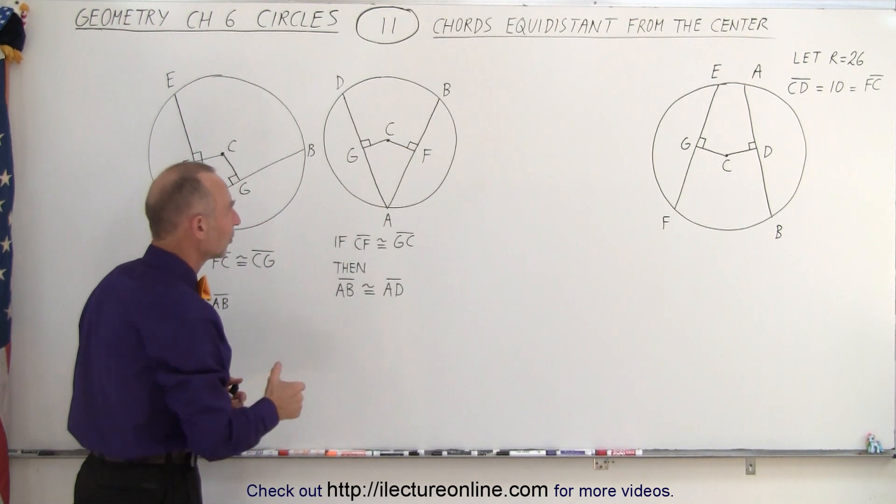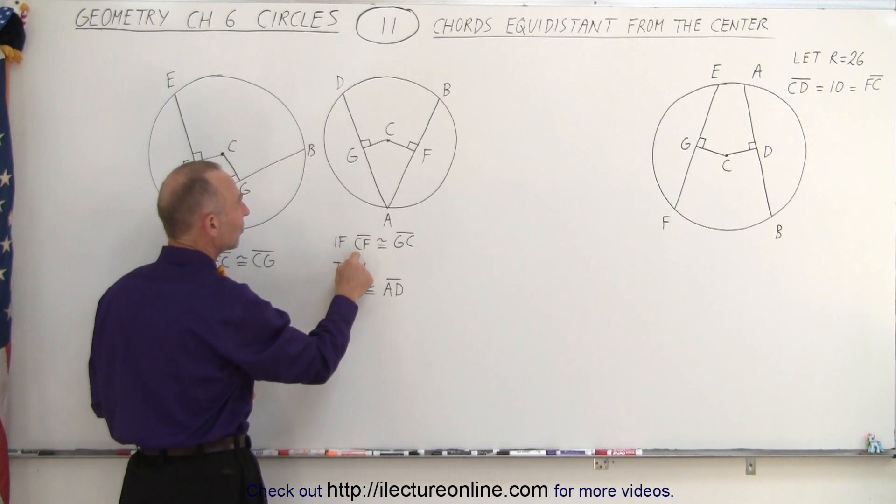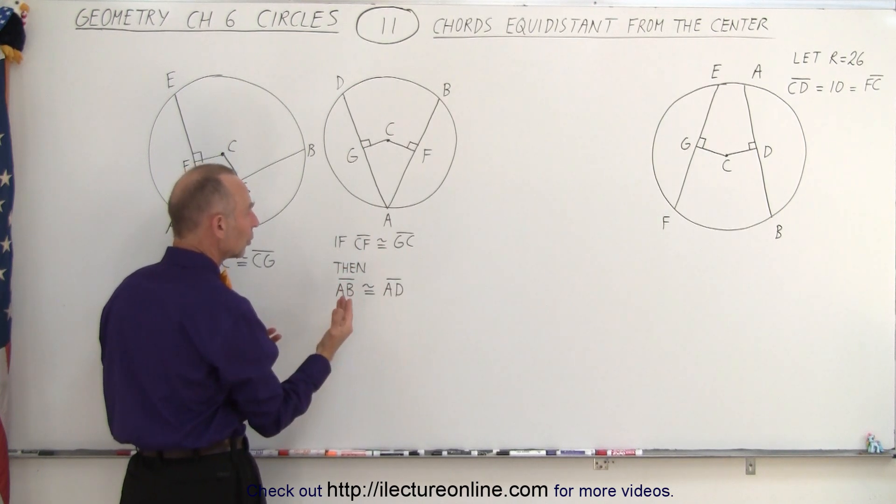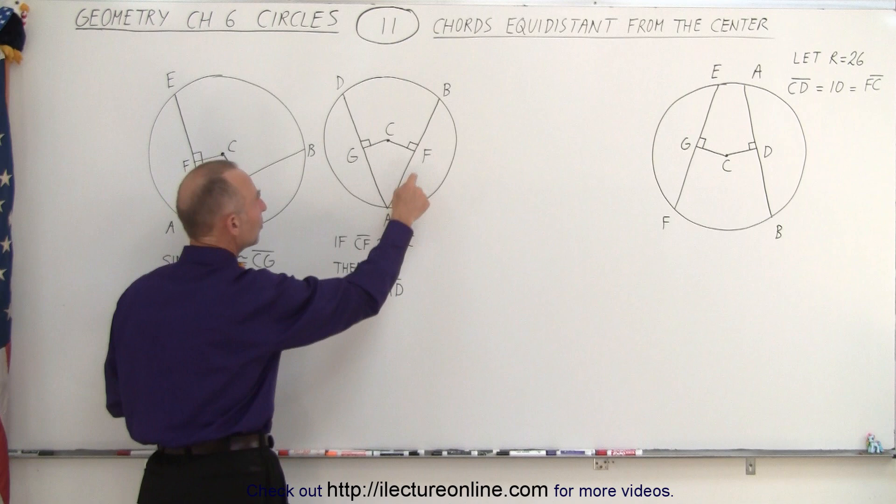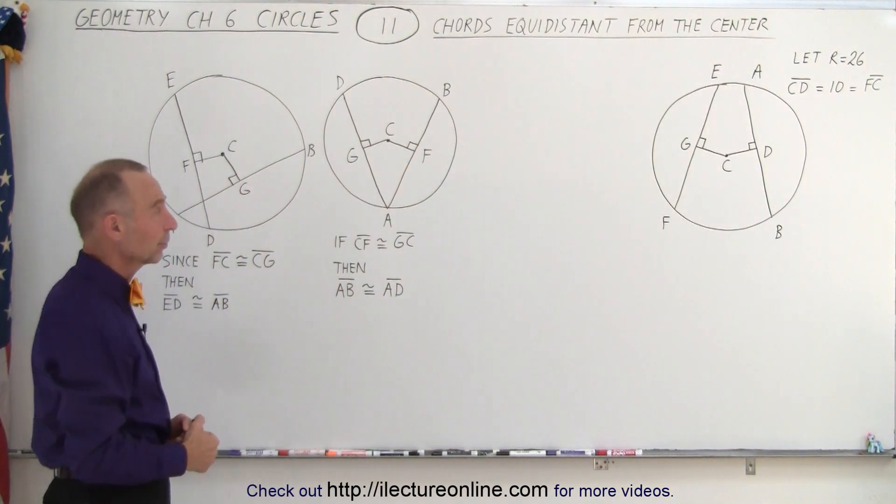That is a requirement and so this distance here would then be equal to this distance there and that's indicated right here. If CF is congruent to GC, then we can conclude that the length from A to B must equal to the length from A to D. In other words, the two chords must therefore be congruent.